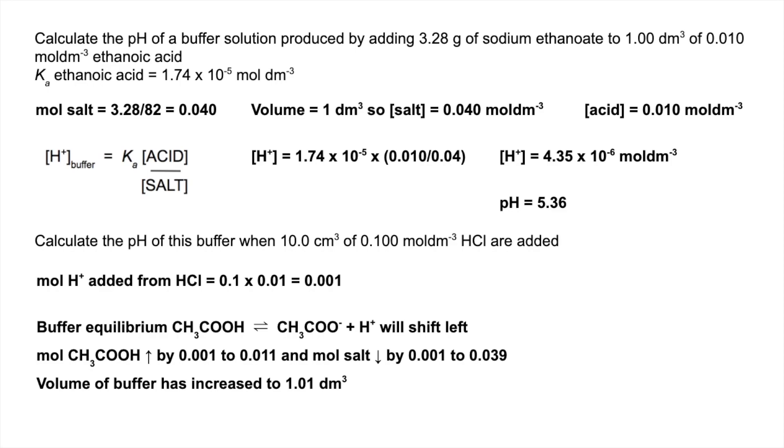So the new volume for the buffer is 1.01 of a decimeter cubed, so the new concentrations of acid and salt are those numbers there. So that's just moles over volume, but remember the volume's got to be in dm³.